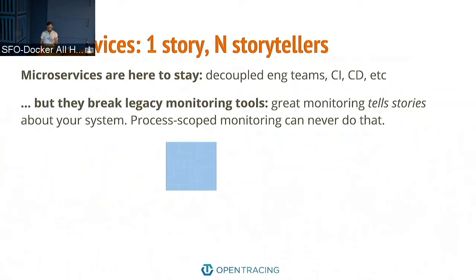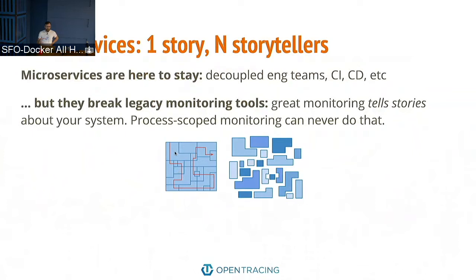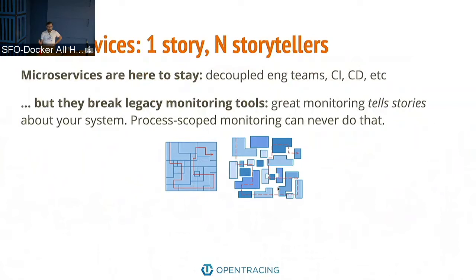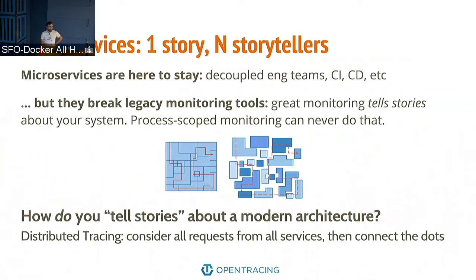Inasmuch as you had a monolith with shared library boundaries inside it, those libraries became microservices. A transaction used to flow through your process in a branching, forks-and-joins kind of way. That flow now dots across a variety of subsystems within your architecture. If your monitoring systems tell stories about these little polygons but don't tell stories about the entire big picture, it's almost impossible to answer really basic questions — like, literally, what happened with this request? I have not met someone who's deployed microservices without a tracing story who is actually able to answer that very basic question.